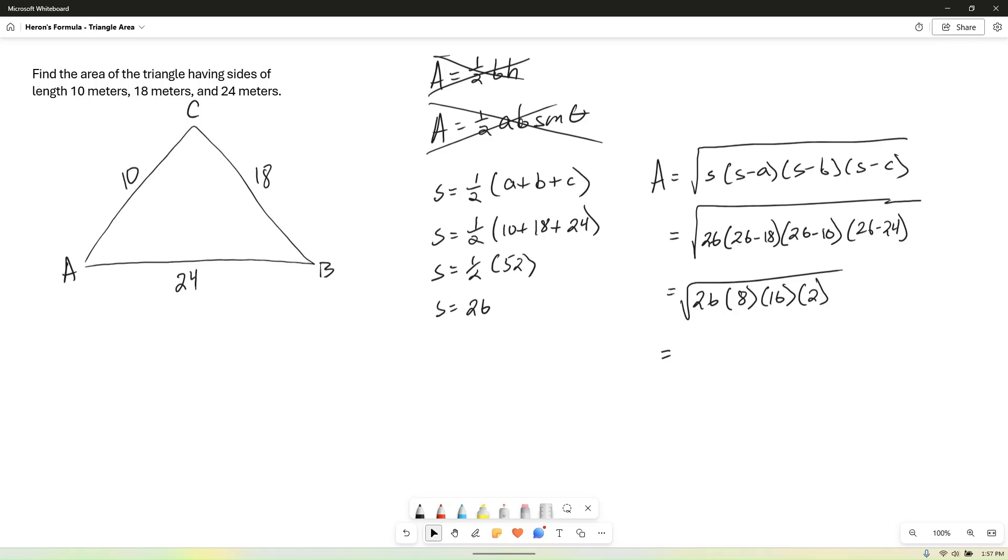And then we can go ahead and multiply all that. So 26 times 8 times 16 times 2, that's kind of a big number. It's 6,656. So area is equal to the square root of 6,656. And if we actually compute that square root, which we can use our technology to do, it turns out that the square root of 6,656 actually simplifies to 16 times the square root of 26.